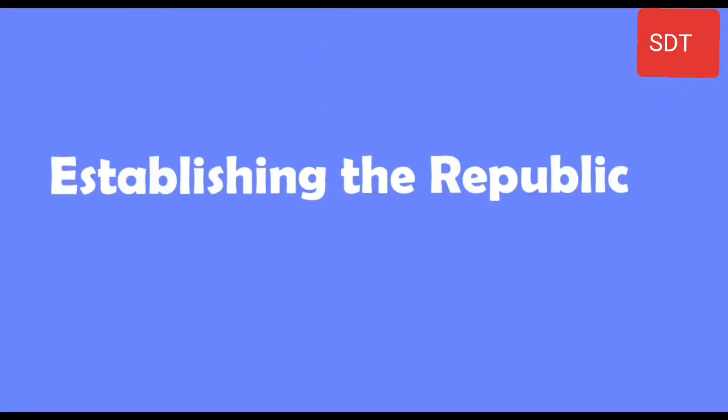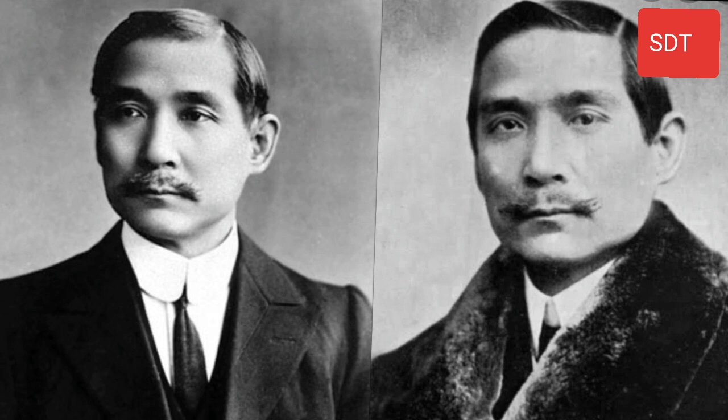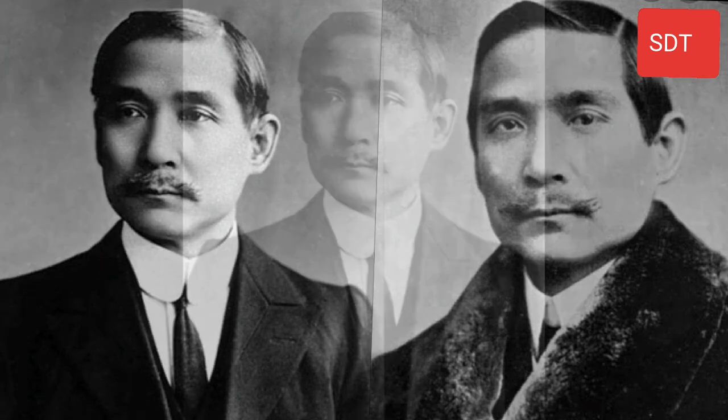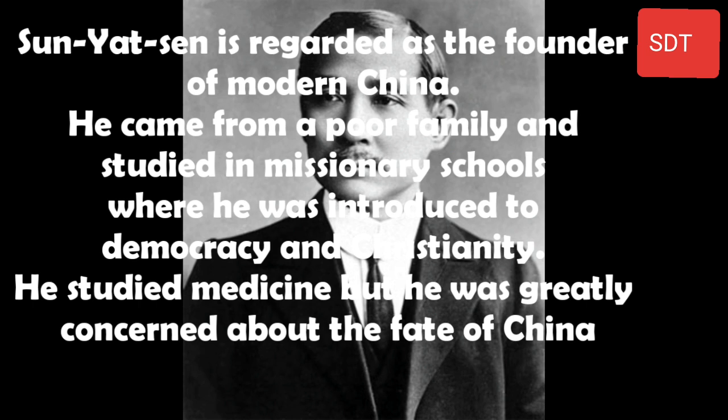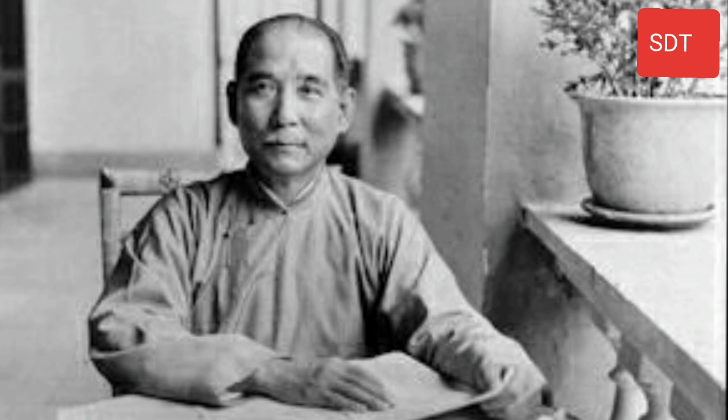Establishing the Republic. The Manchu empire was overthrown in 1911 and a republic was established under Sun Yat-sen. Sun Yat-sen is regarded as the founder of modern China. He came from a poor family and studied in missionary schools where he was introduced to democracy and Christianity. He studied medicine but was greatly concerned about the fate of China. He studied China's problems and designed a program of action called the Three Principles, or San Min Chui.